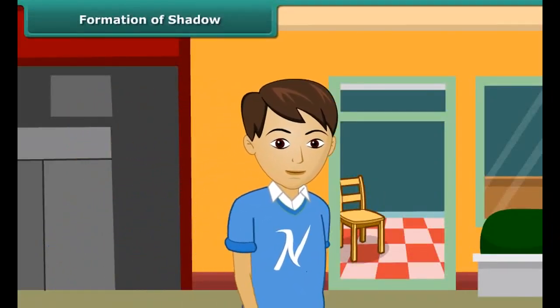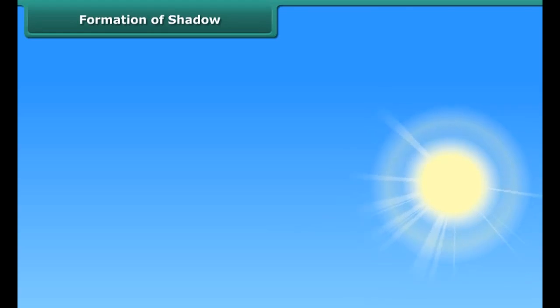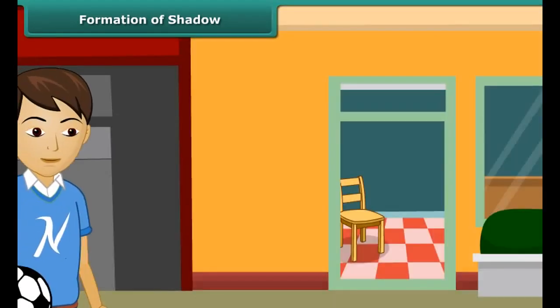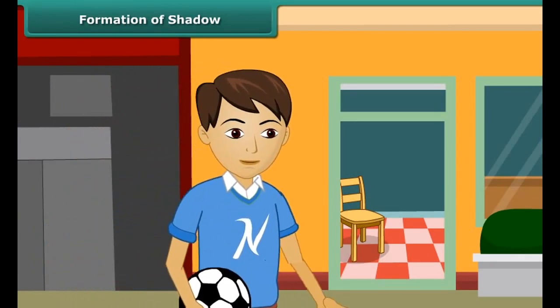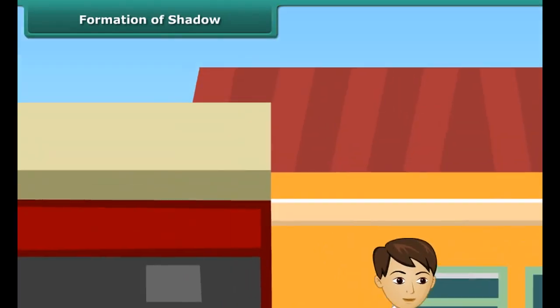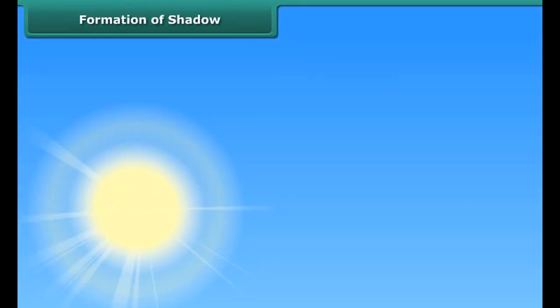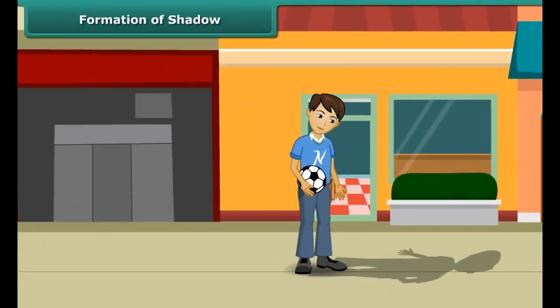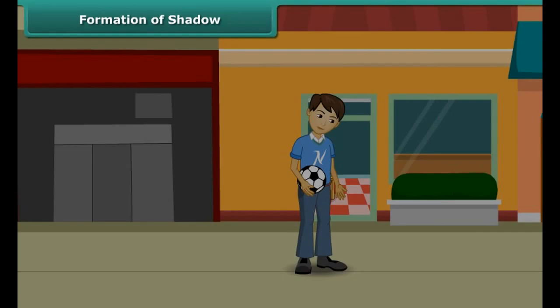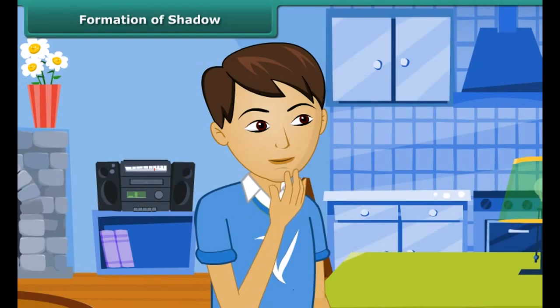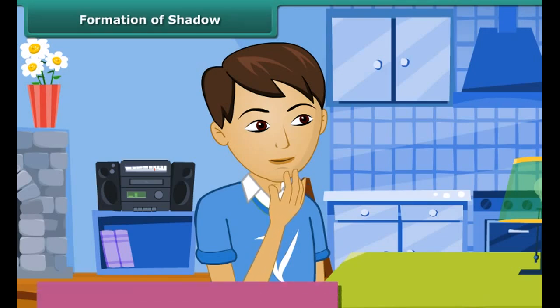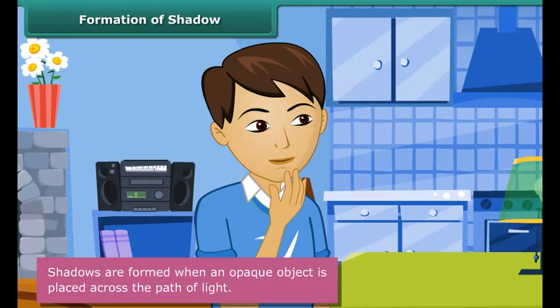Frosted glass, tracing paper, and greased paper are examples of translucent objects. Your mischievous brother Ashish picks a straw out from a glass and tries to look at you through it. After a while the straw bends, and when Ashish tries to look at you through the bent straw he is unsuccessful. This activity proves that light travels in a straight line.